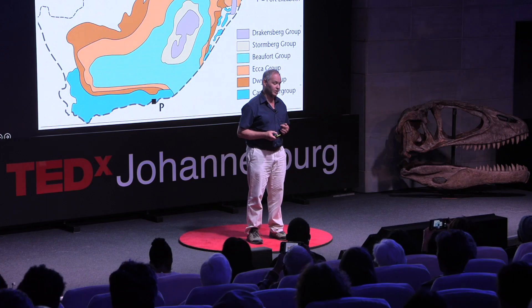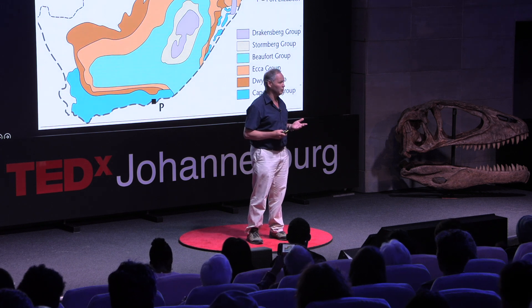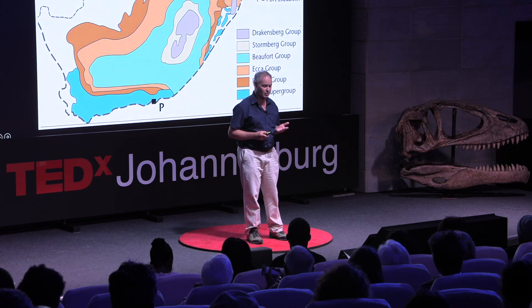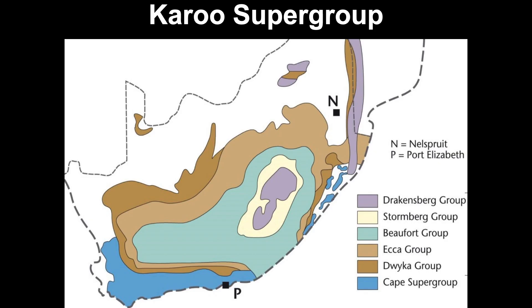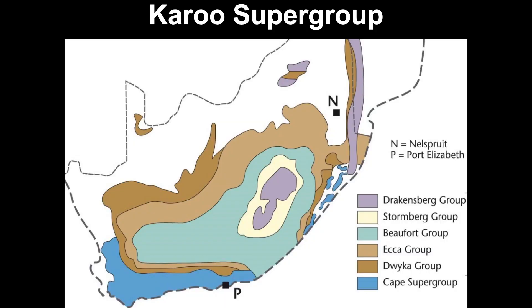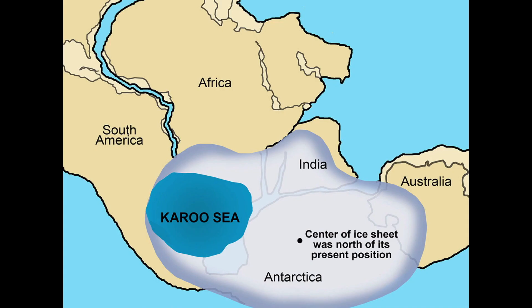The Karoo Supergroup comprises different rock formations. At the bottom are the dark brown rocks of the Dwike Group, deposited 300 million years ago in an ice period. Overlying that are the lighter brown rocks of the Eka Group, deposited in a marine environment. Above that are the green rocks of the Beaufort Group, packed with fossils, and then the rocks of the Stormberg in white, where we find some of the oldest dinosaurs and earliest mammals in the world.